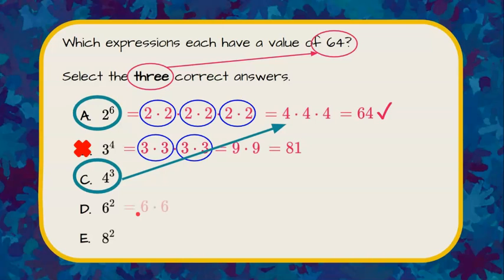D. That is six twice. Six times six is 36. That does not have a value of 64. So hopefully choice E will.